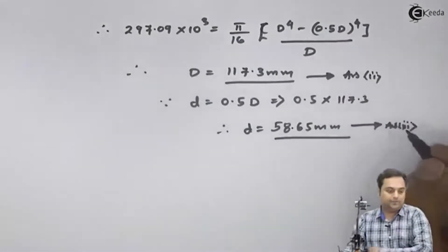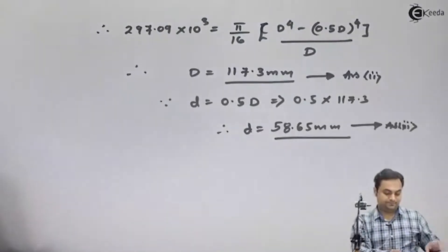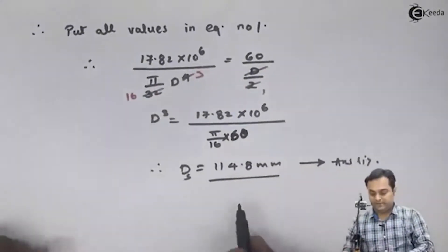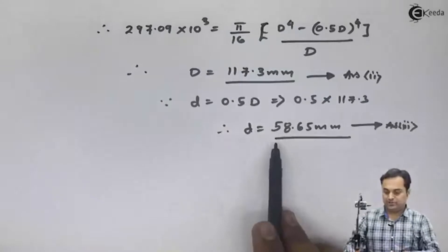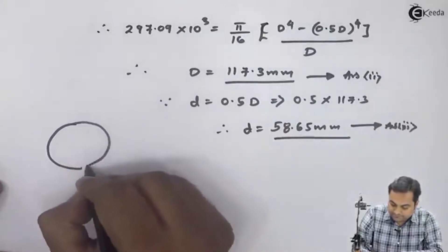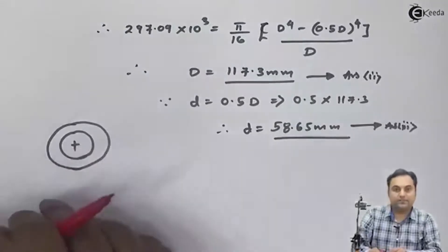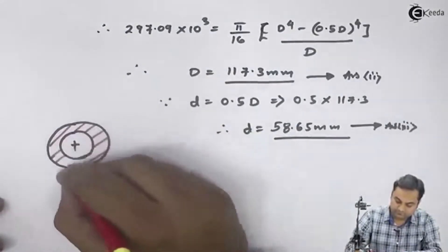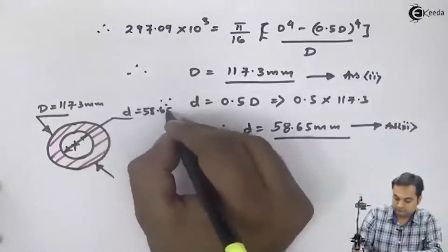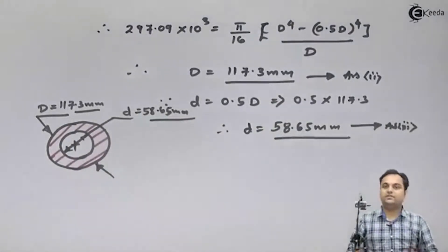So to replace a solid shaft of diameter 114.8 mm, we need a hollow shaft with an external diameter of 117.3 mm and an internal diameter of 58.65 mm. This is the cross-section of the hollow shaft that replaces the solid shaft, and with this we complete the question.